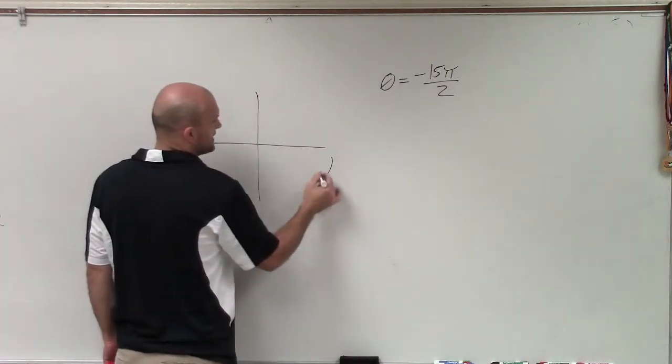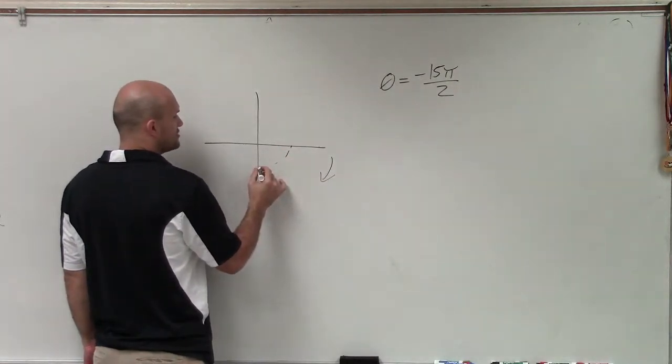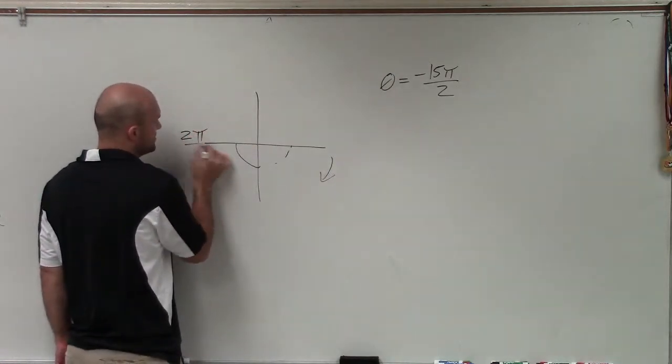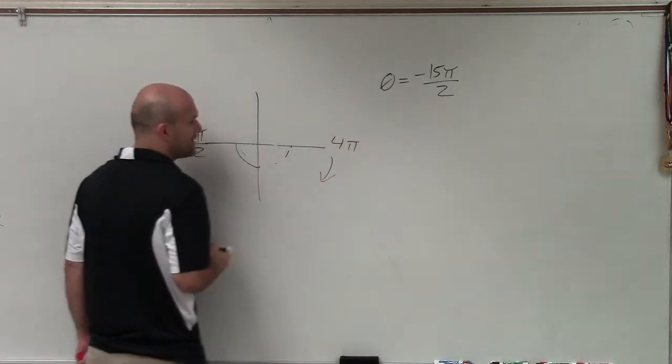If we're going in the negative direction, well, this would be negative pi halves, right? So this would be pi. And what I do is I like to take my denominator. So this would be 2 pi over 2, 3 pi over 2. And then this would be, all the way around, would be 4 pi over 2.